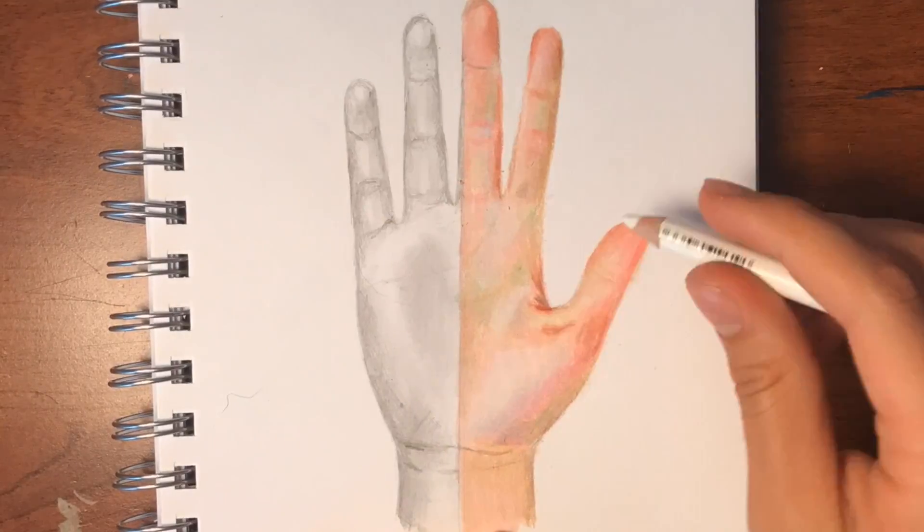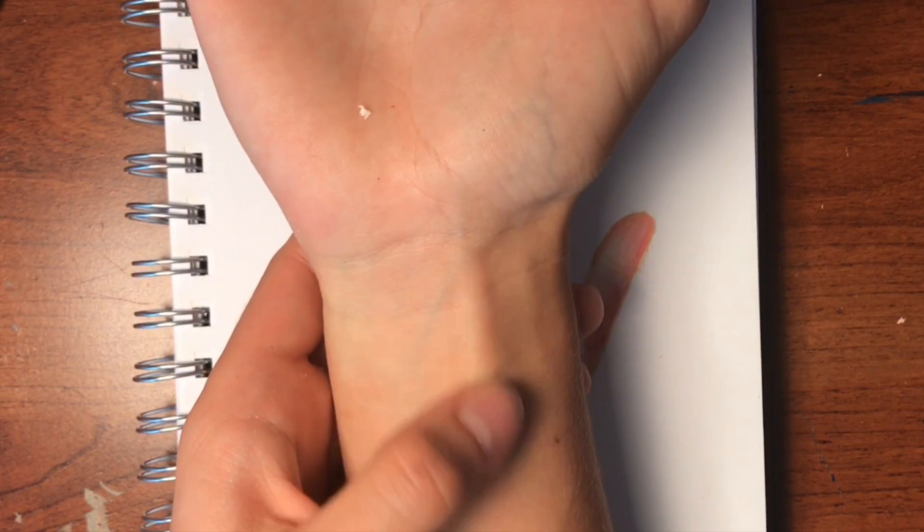There are always more colors than you'd realize. So you see the hand has a lot of veins and tendons in it that stick out a little bit, so make sure you get those in there as well.